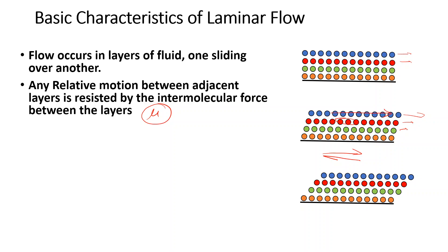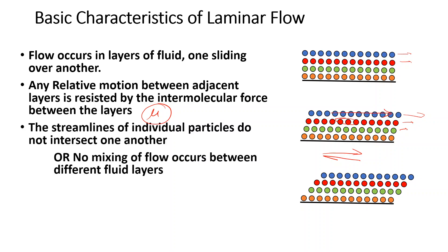Another characteristic is that the streamlines of individual particles do not intersect one another. In laminar terms, if one layer is moving at a certain level, the other layer will be moving at a different level, and they will not intersect one another. In other words, there is no mixing of flow between different layers.